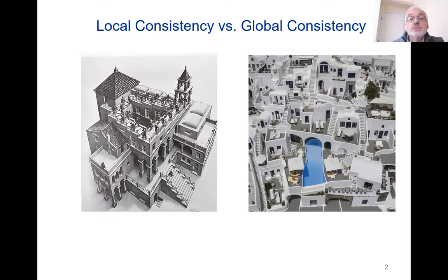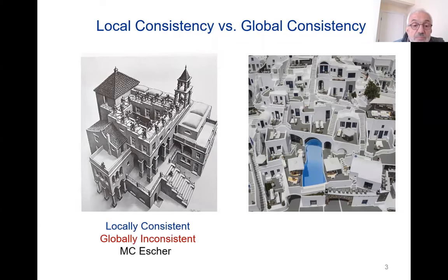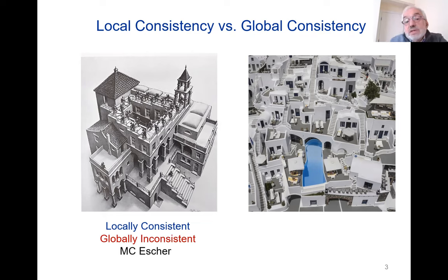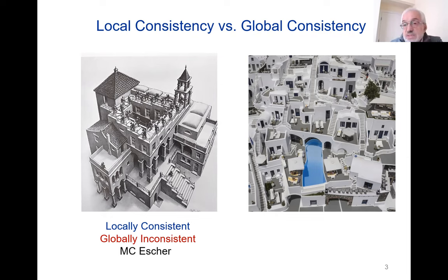But if you look at the whole drawing, it represents an impossible design — not something you can actually materialize. So it can be described by the terms: a state of affairs which is locally consistent but globally inconsistent.